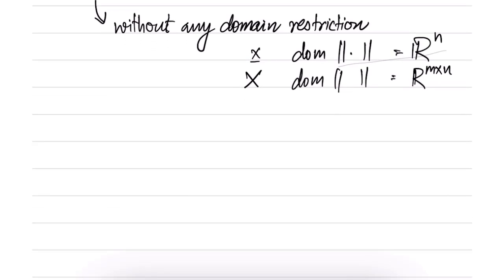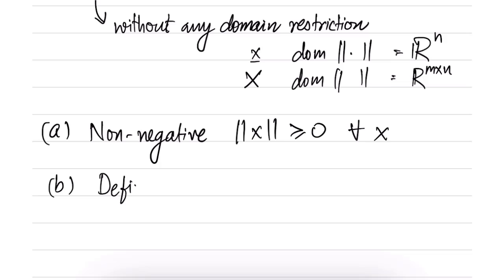Any function which is defined over its entire domain is a valid norm if it satisfies four properties. The first is that it should be non-negative, which means that ||x|| should be greater than or equal to zero for all x. Then the second is that it should be definite. Definiteness property says that ||x|| = 0 only if x = 0. So only if x is equal to zero can the norm be zero. It cannot be possible that norm is zero but x is not zero.